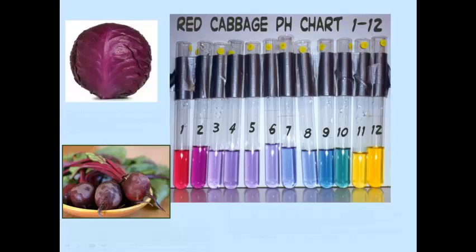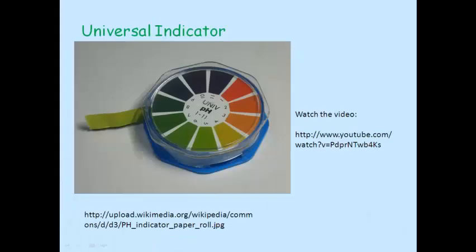Many natural sources such as beets and cabbage are also indicators. Universal indicator contains many indicators that turn different colors at different pH values.